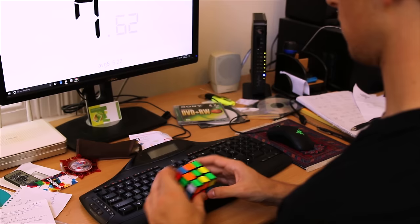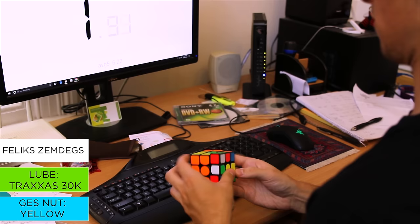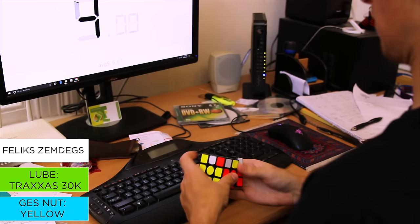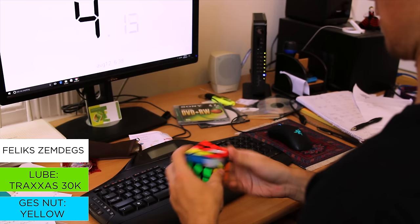The GAN 356 Air UM is currently my main speedcube. My preferred setup is yellow nuts, a medium to tight tension, and I lubricate it with Traxxas 30K. These settings allow me to turn as fast as I like, and yet the cube still remains stable. I also like how subtle the magnets really are during speed solves. They add awesome stability and don't interfere with your turning.